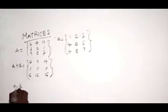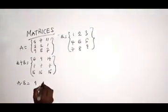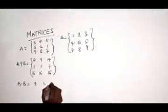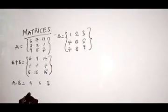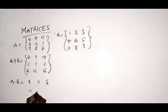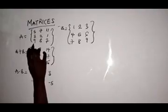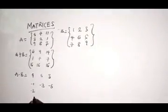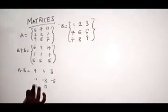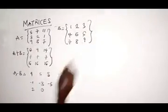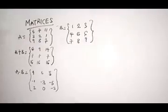Let's do A minus B. My A minus B is going to be: 5 minus 1 is 4, 7 minus 2 is 5, 11 minus 3 is 8. Then 3 minus 4 is minus 1, 2 minus 5 is minus 3, 1 minus 6 is minus 5. Then 9 minus 7 is 2, 8 minus 8 is 0, and 7 minus 9 is minus 2. This is your addition and subtraction of 3 by 3 matrix.